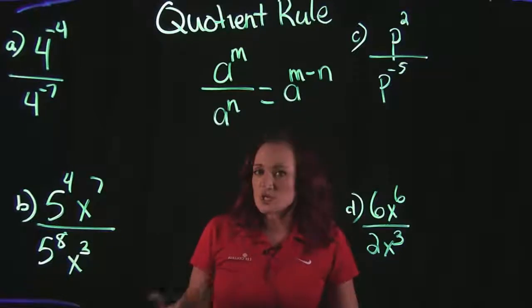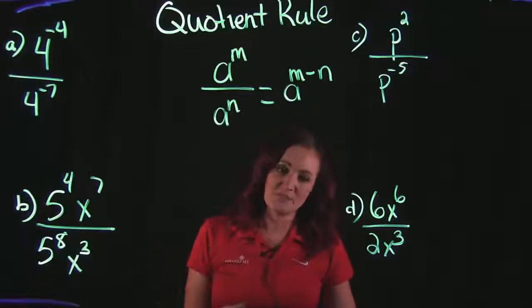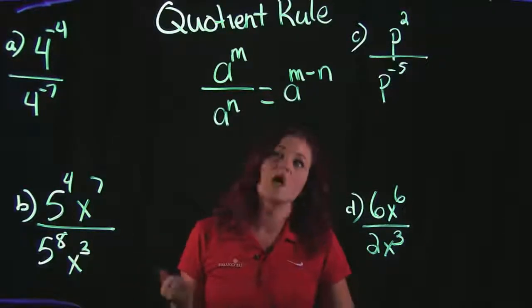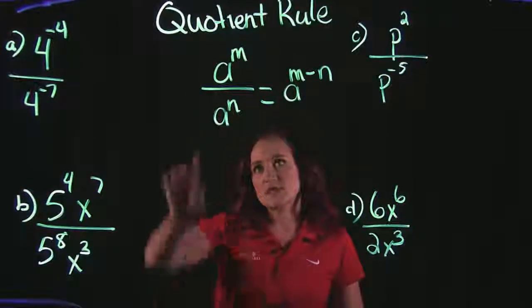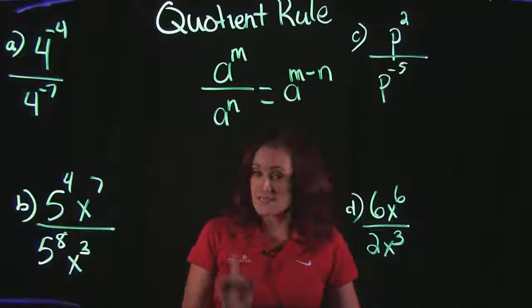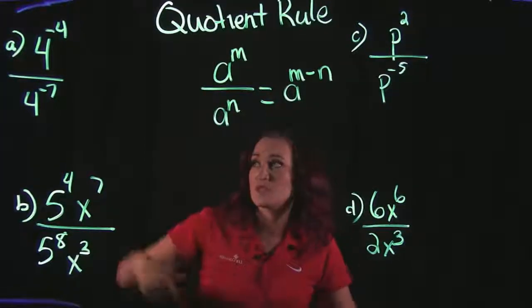And the quotient rule just tells you a way that you can simplify those exponents. So the quotient rule is right over here on the screen, and the quotient rule says that when you are dividing like bases, now that's an important part, you have to be dividing like bases.